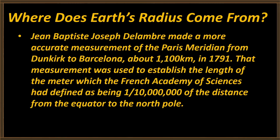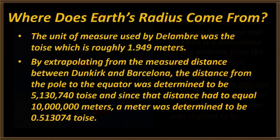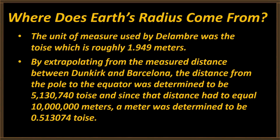In 1670, John Picard measured the radius of the Earth to be the equivalent of 6,329 kilometers — within about half a percent of the modern polar value of 6,357 kilometers. He did that by measuring the distance along the Paris meridian from Paris to a clock tower near Amiens, France. About 120 years later, John de Lembray made a more accurate measurement of the Paris meridian from Dunkirk to Barcelona — a distance of about 1,100 kilometers. That measurement was used to establish the length of the meter, which the French Academy of Sciences had defined as one ten-millionth of the distance from the equator to the North Pole.